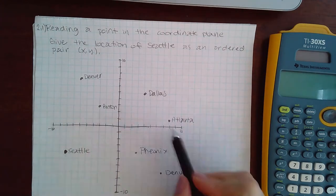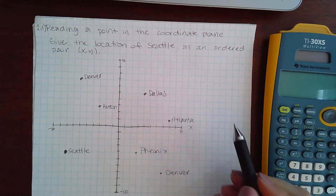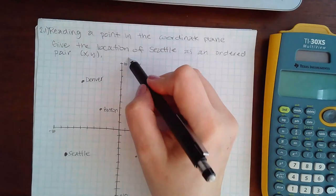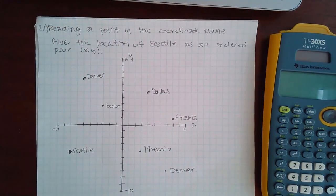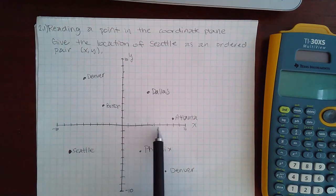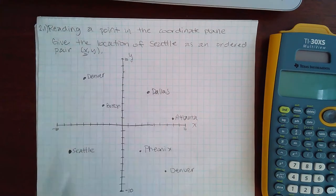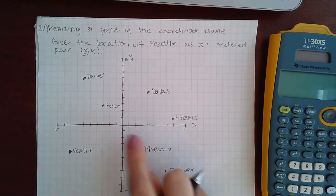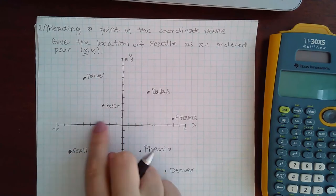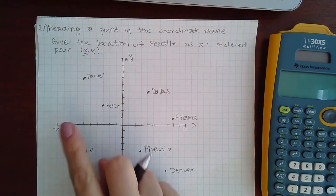This axis here is the x-axis and this axis here is the y-axis. So if I need to move to the right, then that's going to tell me the first component of an ordered pair will be positive. But if I need to move to the left, then that tells me that first coordinate will be negative.